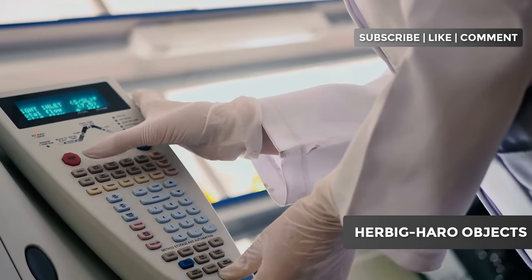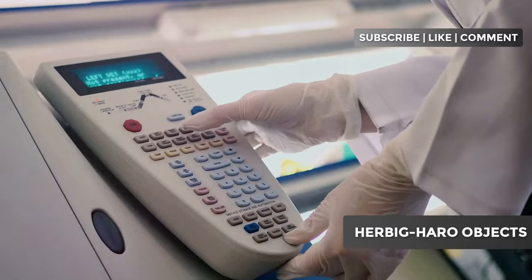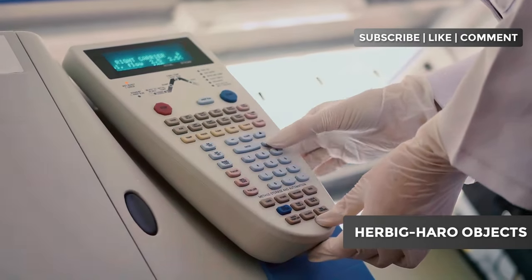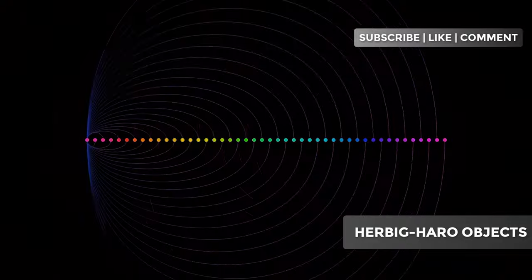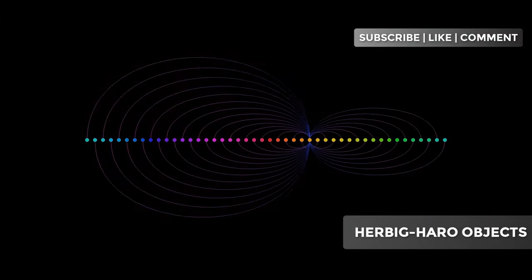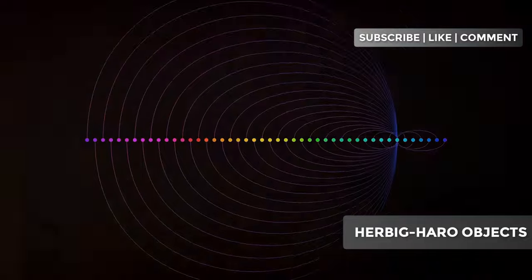One of the main tools is spectroscopy, which allows scientists to analyze the light emitted by HH objects. By breaking down this light into its constituent wavelengths, astronomers can determine the chemical composition, temperature, and velocity of the gas in the jets and shock regions.